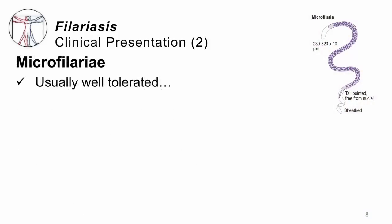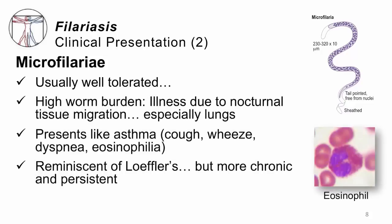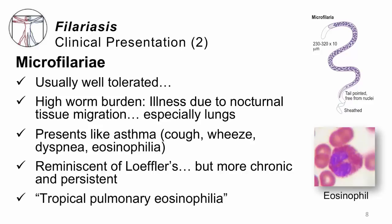That's what the adults do. What do the babies do? Usually not much. Most people with a light infection will not have symptoms related to microfilariae in their blood, but with high worm burdens — night after night, more and more microfilariae migrating through the bloodstream and into the tissues — this can cause problems, in particular in the lungs. With microfilariae in the lungs, there's an IgE-mediated immune response recruiting eosinophils, causing cough, wheeze, shortness of breath, and even eosinophils in the pulmonary fluid itself. This is reminiscent of Löffler's syndrome seen with hookworms, ascaris, and strongyloides, but much more chronic and persistent. The name we give it is tropical pulmonary eosinophilia.